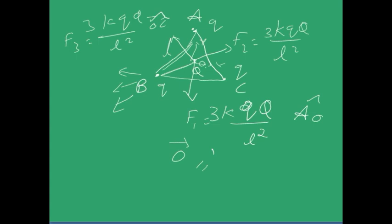Well, you have the calculation. And finally, you get the answer to be 3K Q capital Q by L square plus root 3 K Q square by L square. This is the magnitude and the direction is OB. This is the direction.